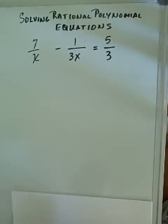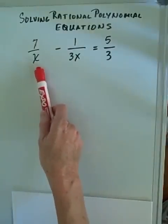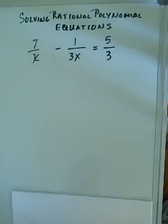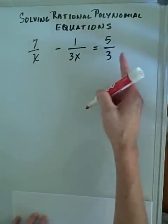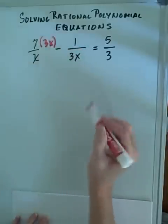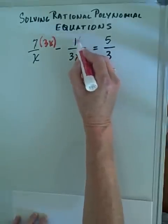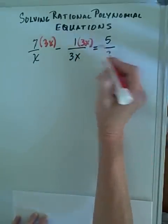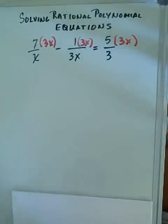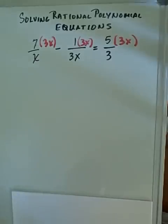In this case, our common denominator needs to have an x and a 3. Since 3x contains both, I'm going to multiply each part by 3x — multiply the 7 by 3x, the 1 by 3x, and the 5 by 3x. Because it's an equation, if we do the same thing on both sides, we're able to cancel.